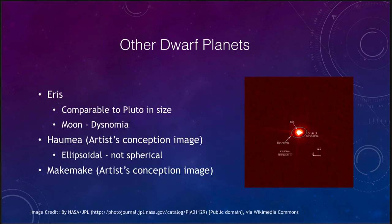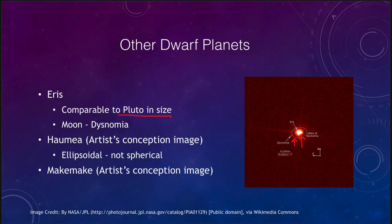Eris is another dwarf planet comparable to Pluto in size. We can see Eris here as the bright object, with its moon Dysnomia orbiting around it. Like Pluto before New Horizons, this is about the best image we have — we can see that these objects are there, but we have no spacecraft to give us detailed views.